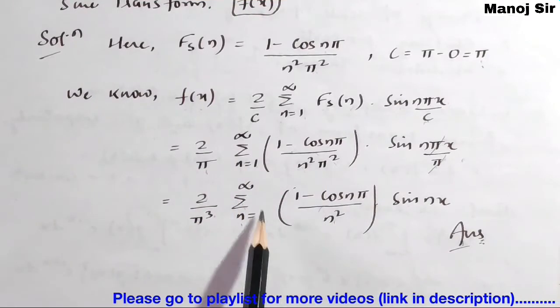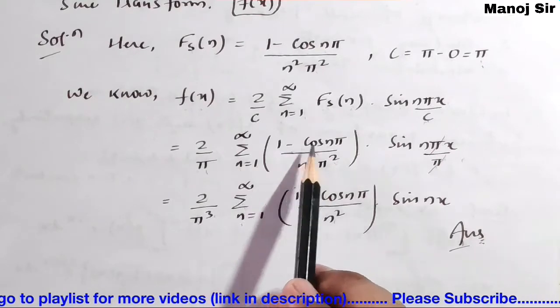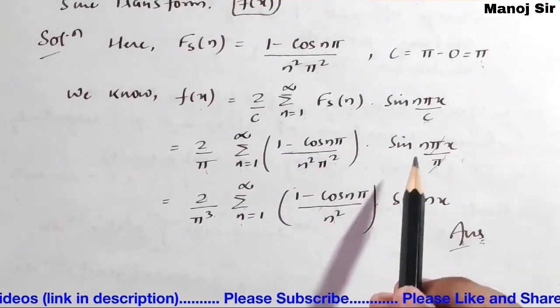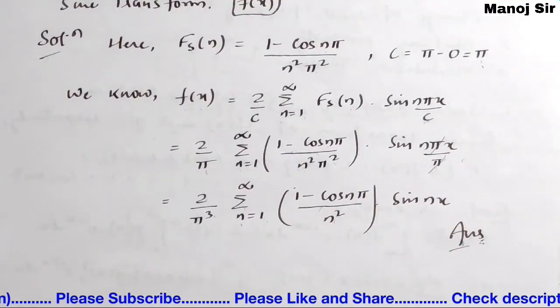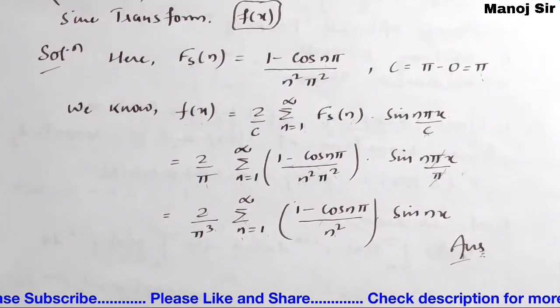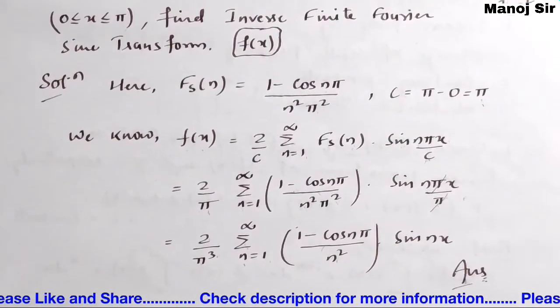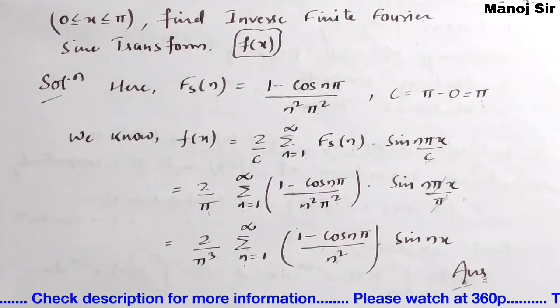So the final answer is: f(x) = (2/π³) times the summation from n = 1 to infinity of [(1 - cos nπ) / n²] times sin(nx). This is the required inverse finite Fourier sine transform. Thank you so much.